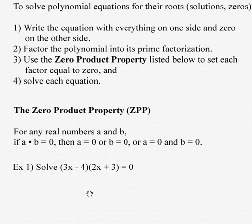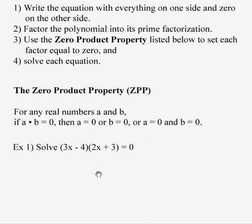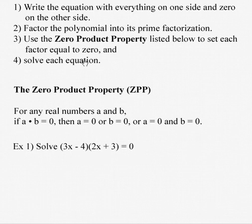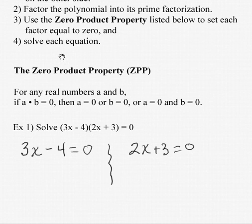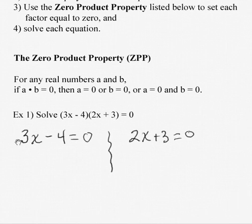This particular equation, we're starting out very simply because we already have everything in step one done. Everything is on one side of the equation, zero is on the other. We already have step two done. Factor the polynomial into its prime factorization, which means factored as far as it can possibly factor. Now we're just ready to practice step three, the zero product property, which says take each factor and set it equal to zero. And then we're going to take step four, which is to solve each equation.